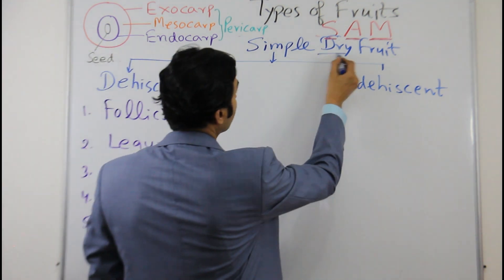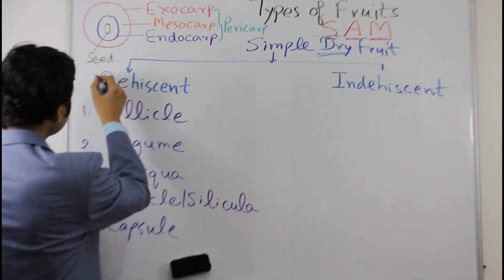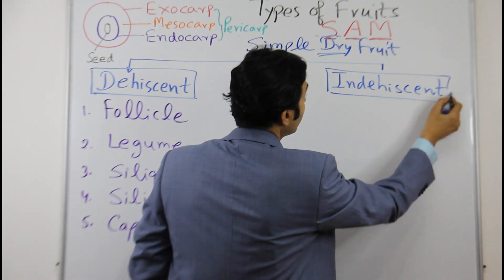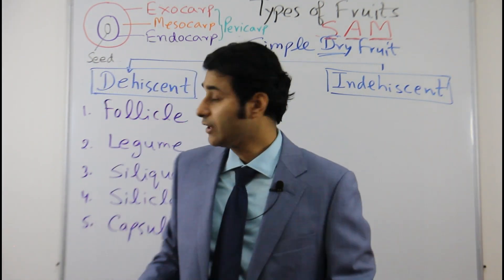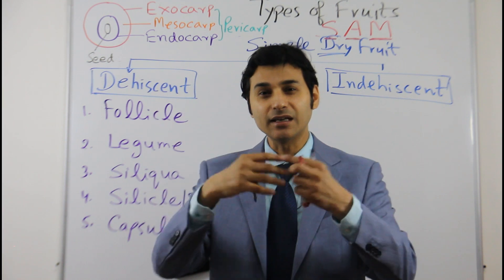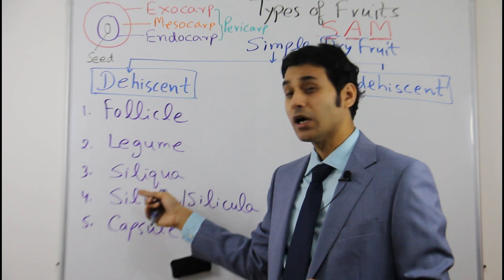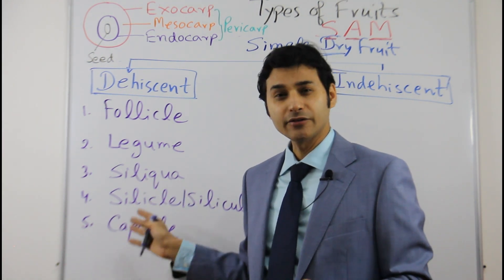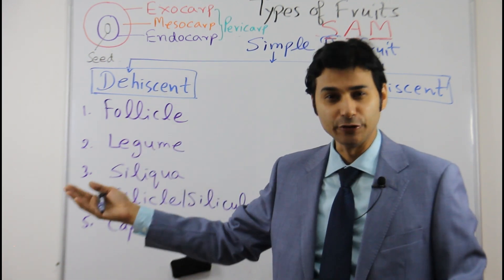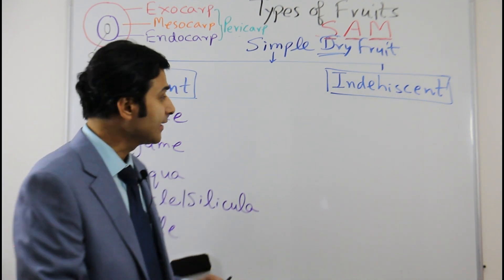We were discussing simple dry fruit, which is dry at maturity — the pericarp is dry. It is of two types: dehiscent and indehiscent. We already discussed the dehiscent types. Dehiscent fruit breaks by itself and liberates the seeds; it has multiple seeds. Types include follicle, legume, siliqua, silicula, and capsule, which I discussed in previous videos.